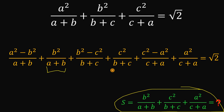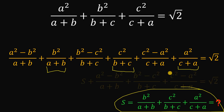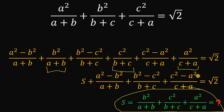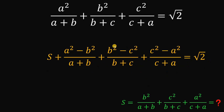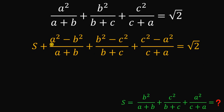So the second term and the third term combine to give us s. Now focusing on the remaining result, we have a squared minus b squared in the numerator, b squared minus c squared, and c squared minus a squared — these are all differences of two squares, so we can factor them out.